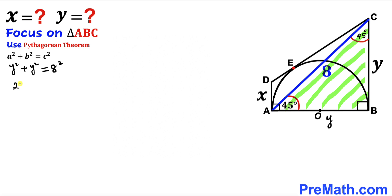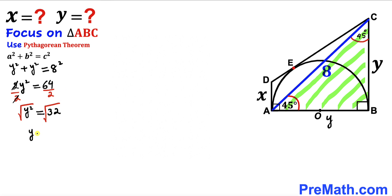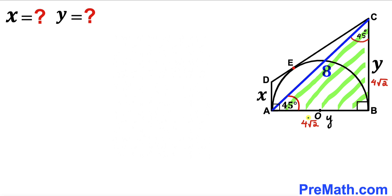Simplifying: 2Y² = 64. Dividing both sides by 2 gives Y² = 32. Taking the square root of both sides, Y = 4√2 units. So BC = AB = 4√2 units.